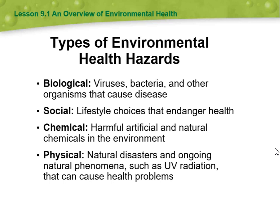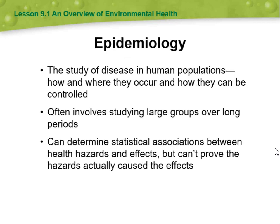Biological refers to viruses, bacteria, and other organisms that cause disease. Social refers to lifestyle choices that endanger health. Chemical refers to harmful artificial and natural chemicals in the environment. Physical refers to natural disasters and ongoing natural phenomena such as UV radiation that can cause health problems.